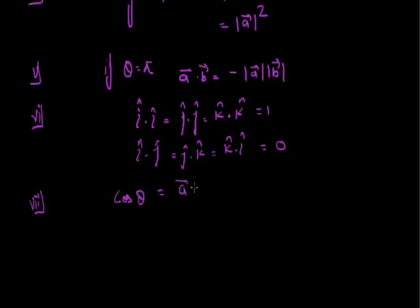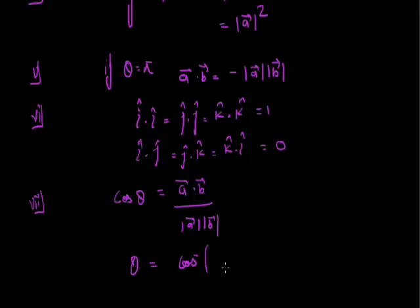Therefore, θ = cos⁻¹(a·b / (|a||b|)). This formula allows us to find the angle between any two vectors given their dot product and magnitudes.